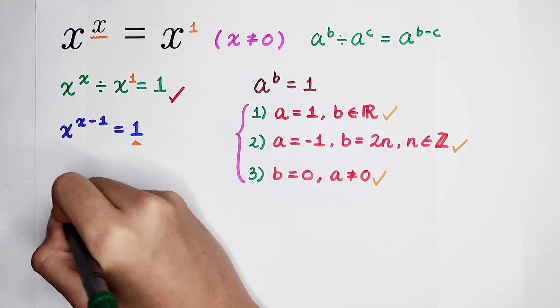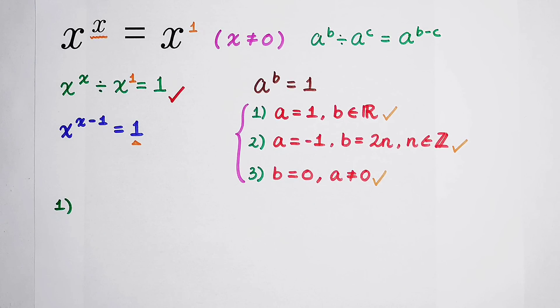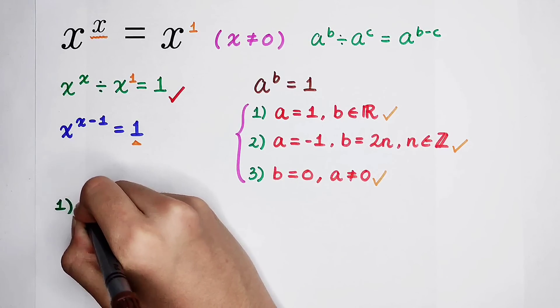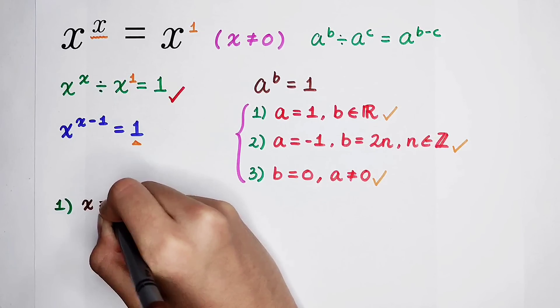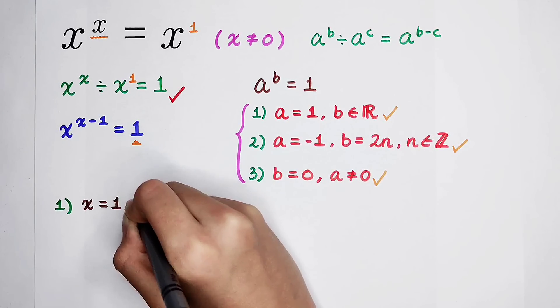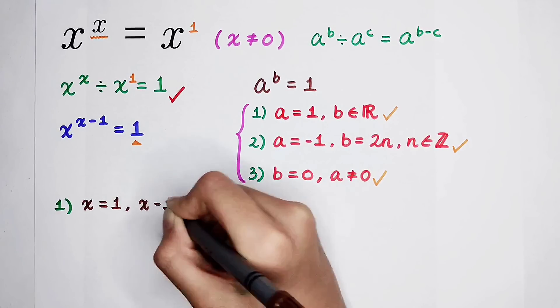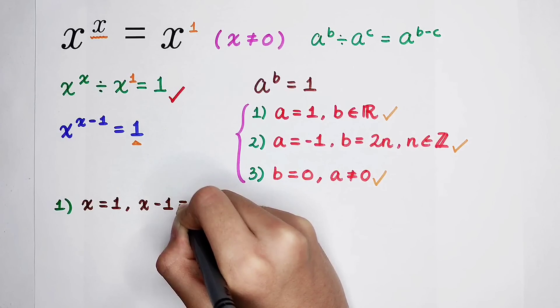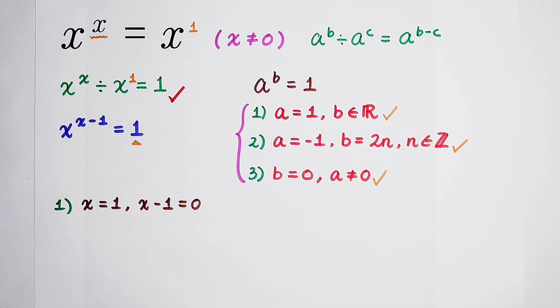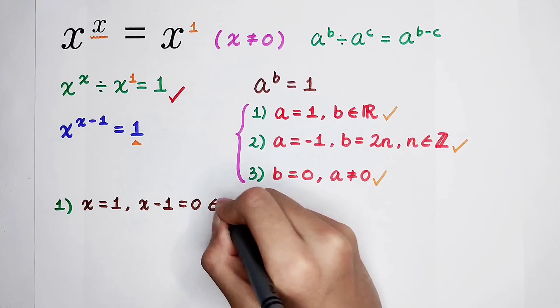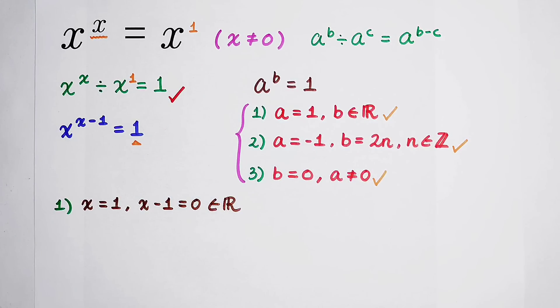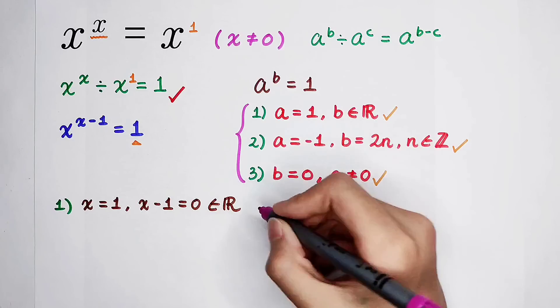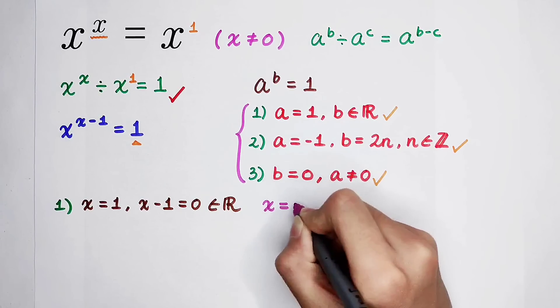Now we have to do it one by one. For the first case, a now is x. When x is equal to 1, then x minus 1 is 1 minus 1, that is 0. It is a real number. So x is equal to 1 is one of the roots of this equation.